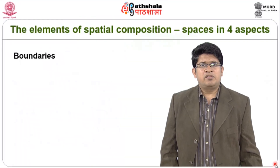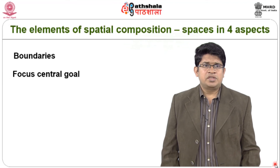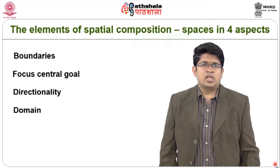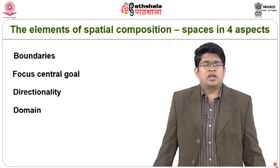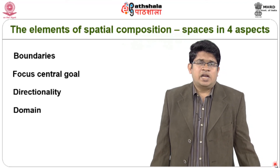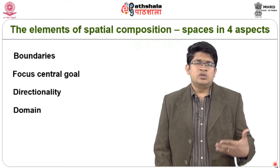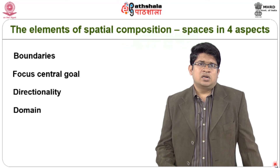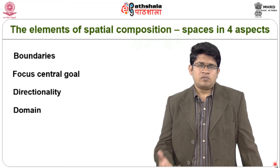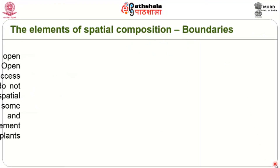There are four important aspects that are elements of spatial composition: boundary, focus/centric goal, directionality, and domain. These four aspects are very important to understand when doing the spatial composition of any particular space, as they come together to bring out the spatial quality of a space and create an interesting feel for both the designer and the user.